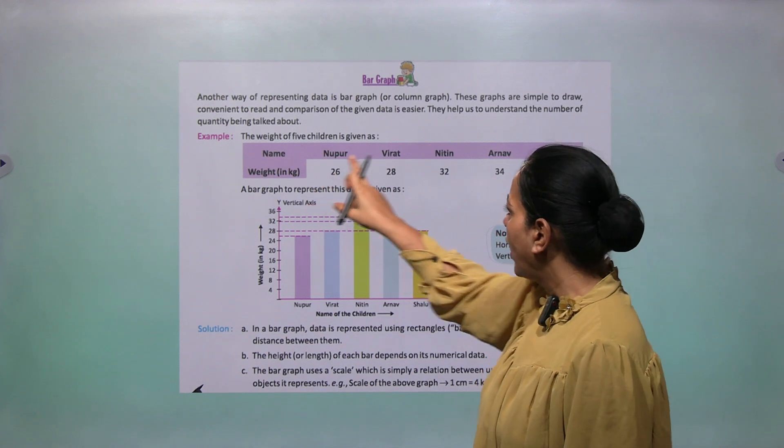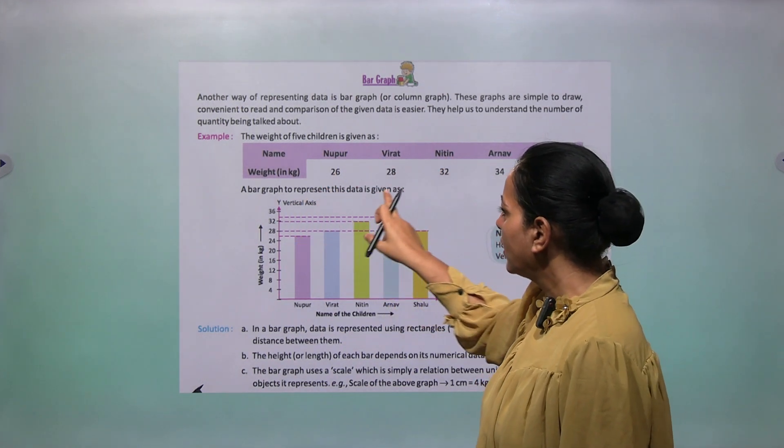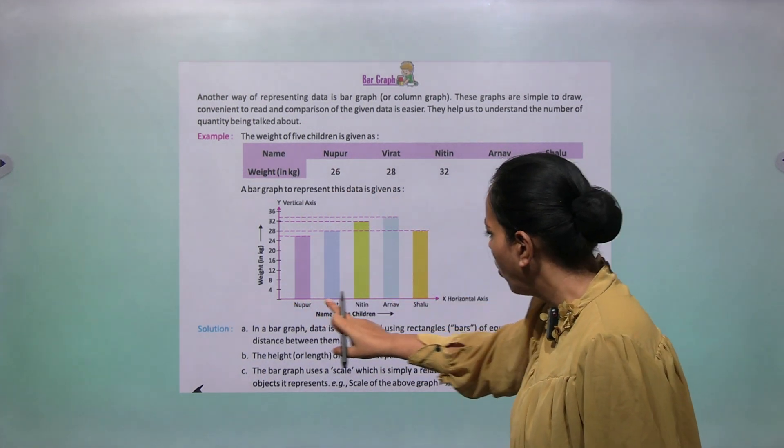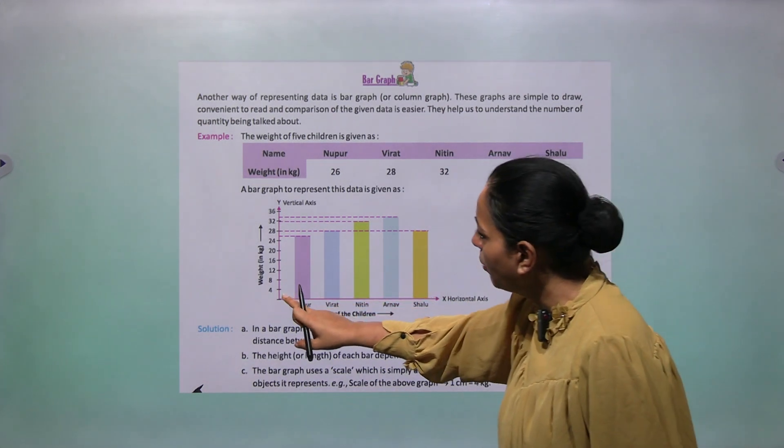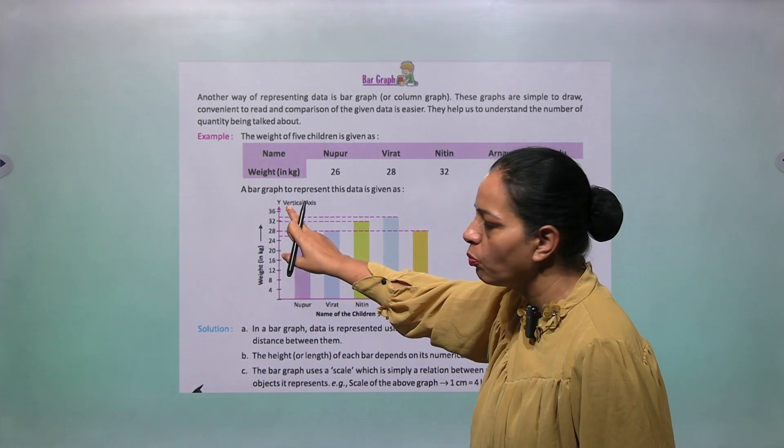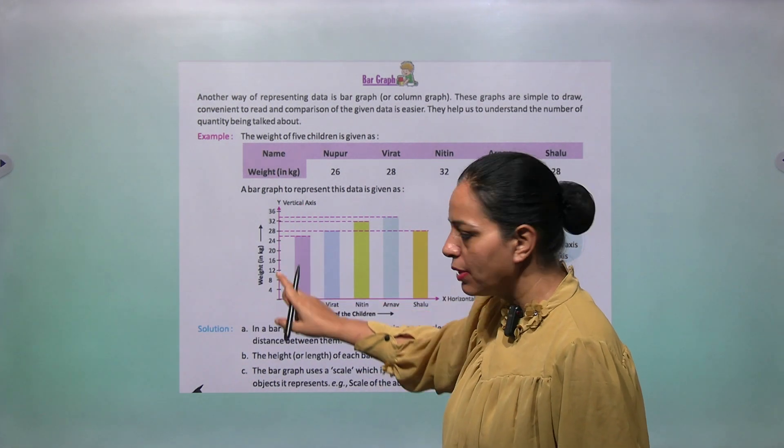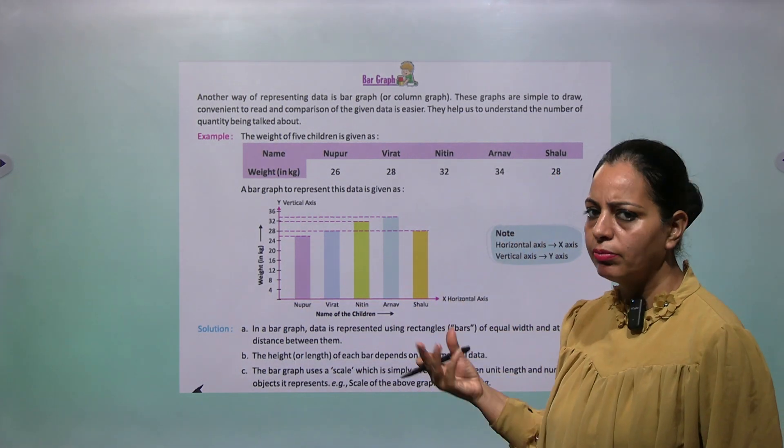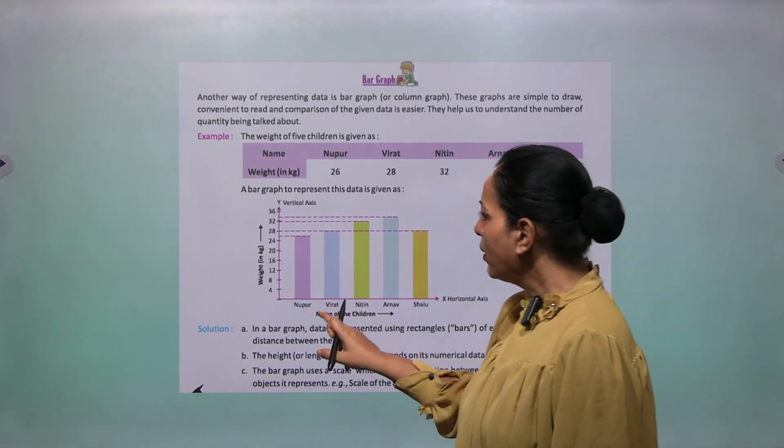Example: The weight of five children is given. Draw a bar graph to represent this data. Now how do we represent the data? Names come to your horizontal axis which we call X-axis, and we draw one vertical axis which we call Y-axis. On the Y-axis we will put numbers, and on the horizontal axis we put the data names.